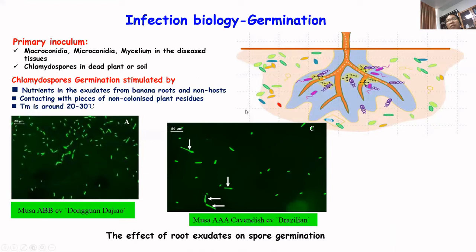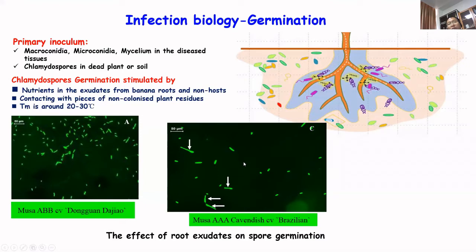The first important infection event is germination. In banana fields, especially in the spring and autumn, disease is more serious. The temperature range from 20 to 30°C is very suitable for germination, especially for the root exudates from the host. Once we compared root exudates from resistant and susceptible varieties, we found those from resistant varieties can inhibit germination. However, exudates from susceptible varieties can improve and accelerate germination.